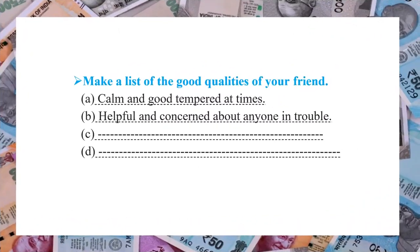The next question asks you to make a list of the good qualities of your friend. I have written two good qualities of my friend as an example, and you can continue with the other two. The first quality is calm and good-tempered; another is being helpful and concerned about anyone in trouble.